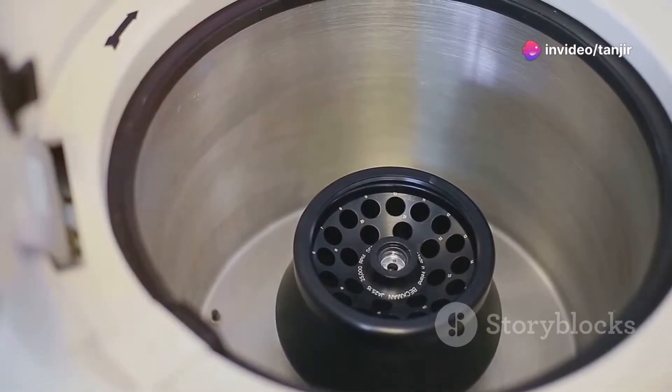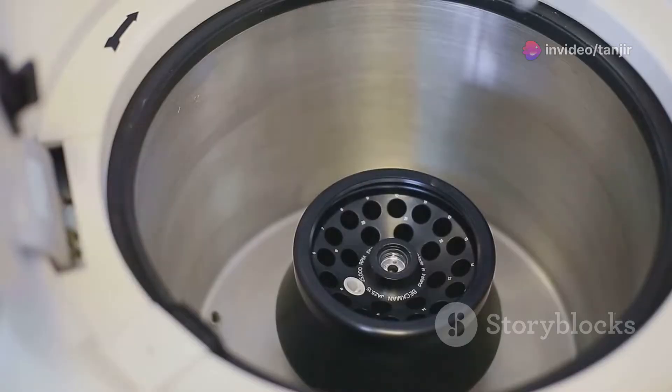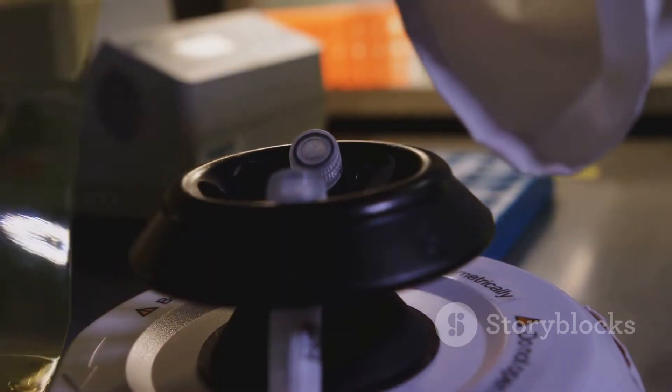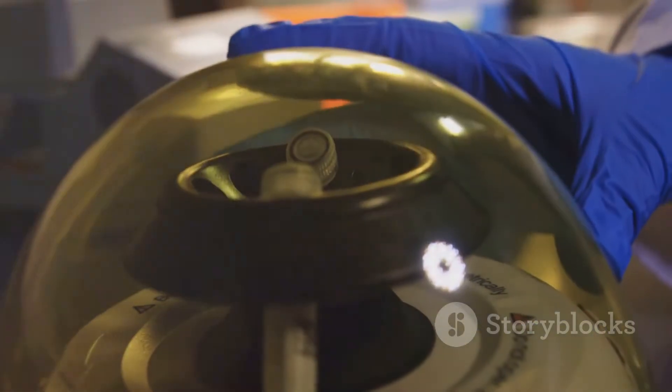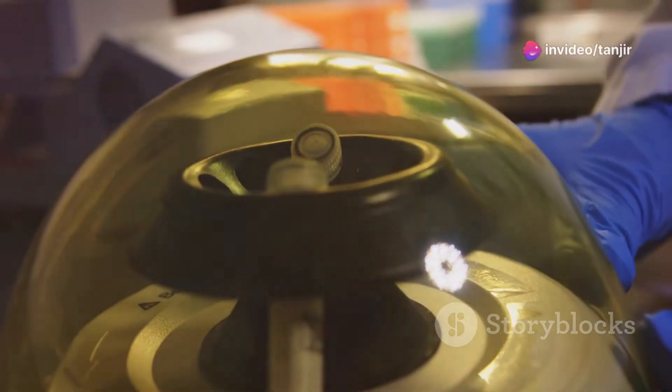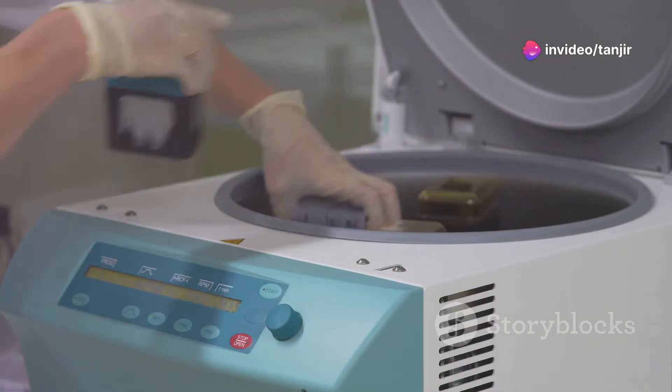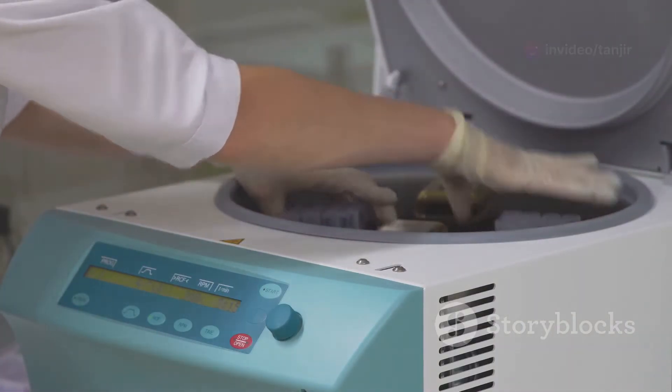A centrifuge does something similar, but with uranium gas. Uranium comes in two primary types, or isotopes, U-238 and U-235. We need more U-235 for nuclear reactors, but it's only about 1% of natural uranium.